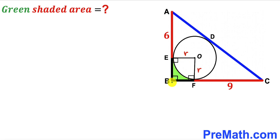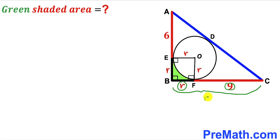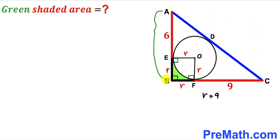From square EBFO, segment BF equals segment EO, which is lowercase r, so BF is r as well. Likewise, segment EB equals segment OF, which is r, so EB is r as well. Therefore, the whole segment BC has length r plus 9, and side AB has length r plus 6.